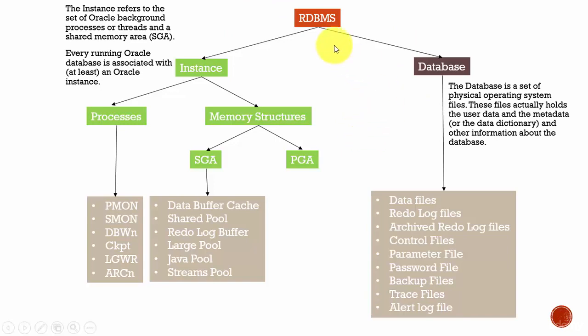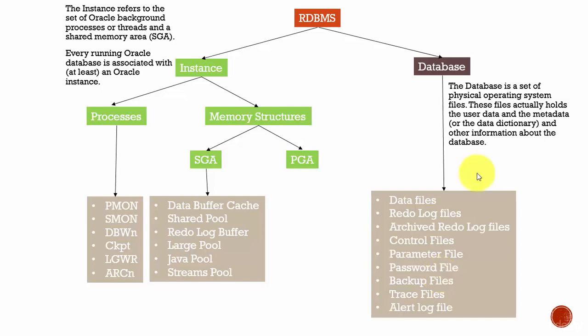But if we go into the details, the RDBMS architecture contains an instance and a database. The database is nothing but a collection of physical operating system files which are used to store your user data, metadata related to the objects in the database, and other information about the database.